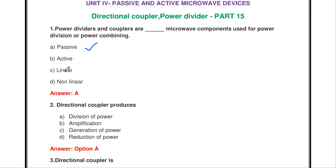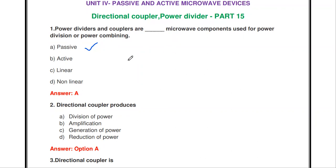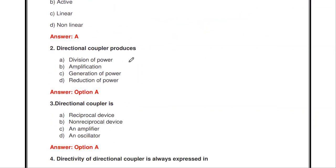The active microwave devices — such as gun diode, magnetron, and klystron — will be covered in the next video. These are all active microwave components.